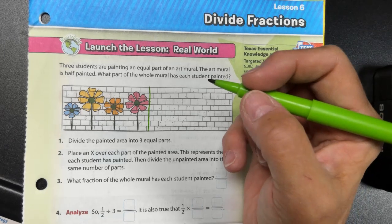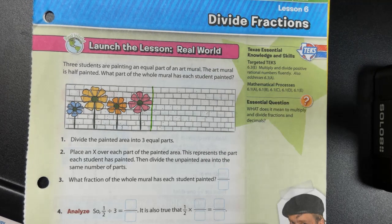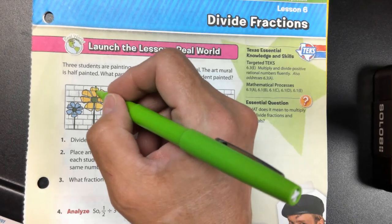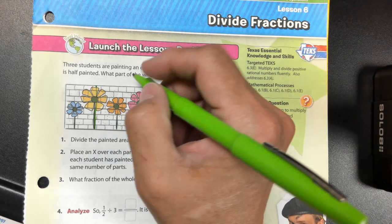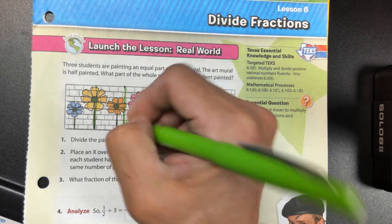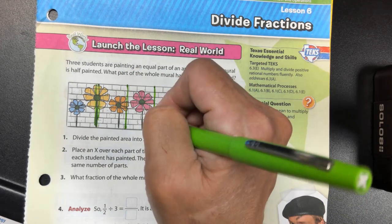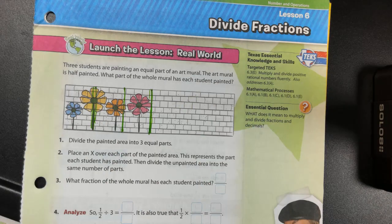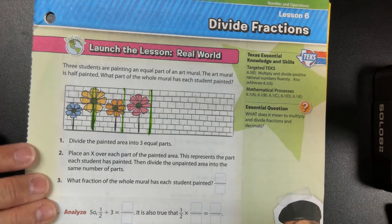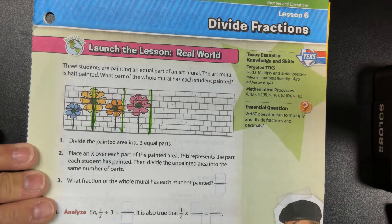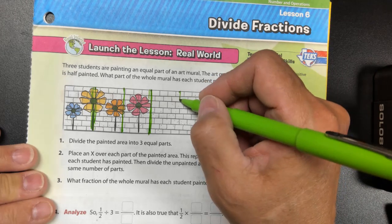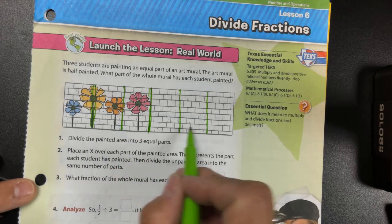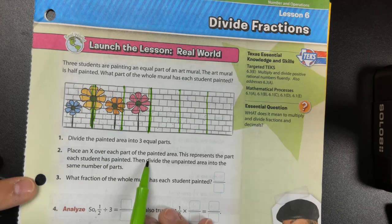I'm going to start by looking at where it's completed and then eyeball where I could make three relatively equal parts. I think I can divide it here — and here. So there are roughly three parts. Now we need to divide the rest of the wall into the same size parts so the whole is equally divided. We've got one, two, three parts here and one, two, three parts there.